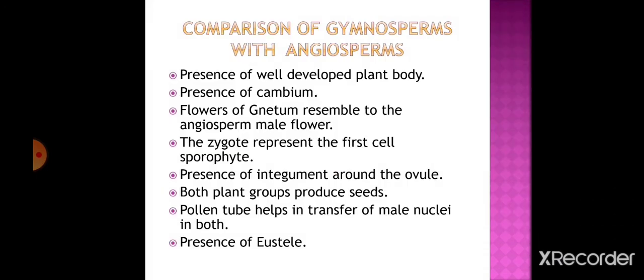Now let us compare gymnosperms with angiosperms. Gymnosperms resemble angiosperms in the following features: presence of a well-organized plant body differentiated into root, stem and leaves; presence of cambium in gymnosperms as in dicotyledons; flowers in Gnetum resemble those of angiosperms; the zygote represents the first cell of the sporophyte; and presence of integument - that is, a covering - around the ovule. Both plant groups produce seeds.